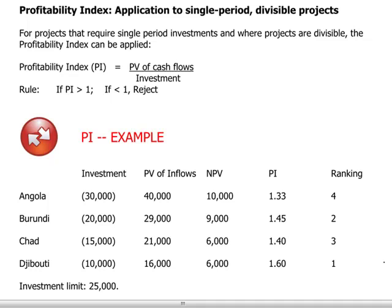Welcome to the EXP Group's discussion of CIMA paper P1. Today we want to cover a few additional concepts connected to investment appraisal, one being the profitability index. This is a method which seeks to take the present value discounting and net present value calculations of a series of cash flows for different projects, and to rank them so that we can determine the best combination or outcome if we have a limited amount of funds to invest.